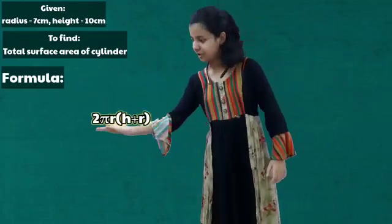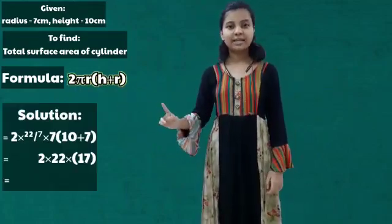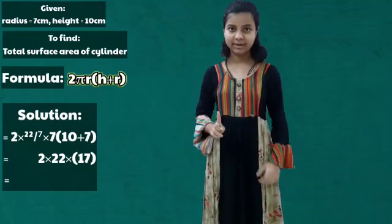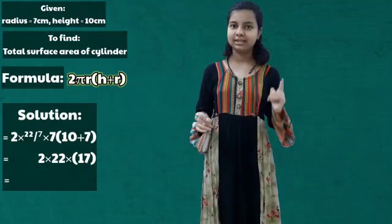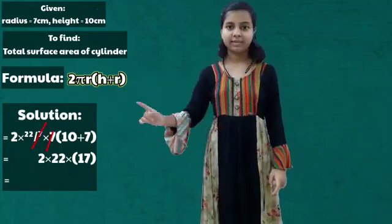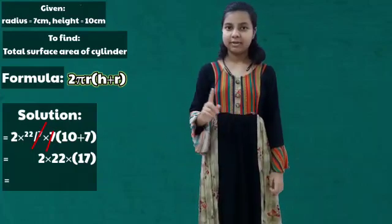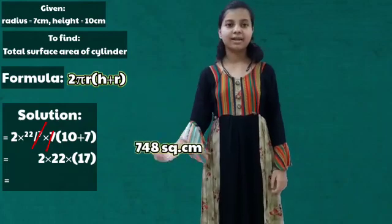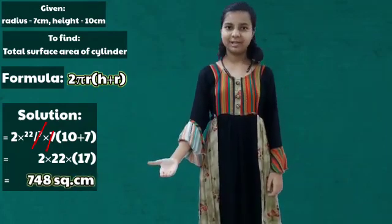Now let's put these values into the formula. We get 2 × (22/7) × 7 × (10 + 7). The 7s get cancelled and remaining is 2 × 22 × (10 + 7) = 2 × 22 × 17 = 748 square centimeters.